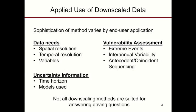Let's talk about the applied use of downscaled data. Not all downscaling methods are suited for answering each individual driving question. There's a matter of sophistication in selecting a method best suited for the end user's needs. We can think about data needs in terms of spatial resolution, temporal resolution, and the suite of variables that might be needed. We can also think about uncertainty information, the number of models one might want to use, and the time horizon for a climate change adaptation question.